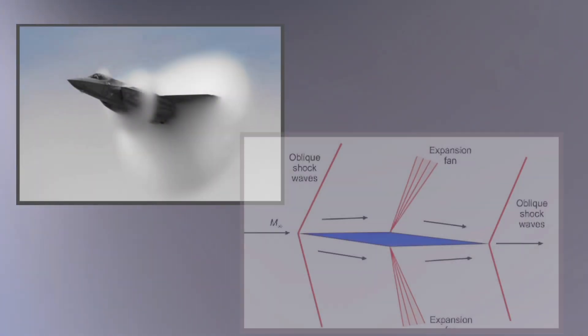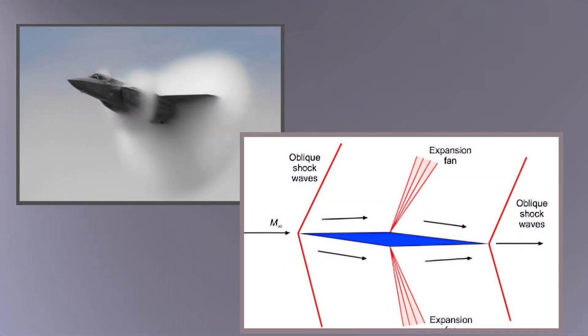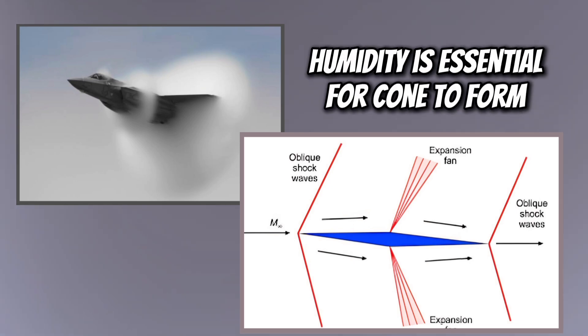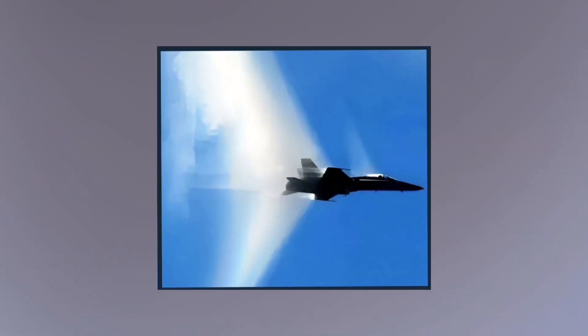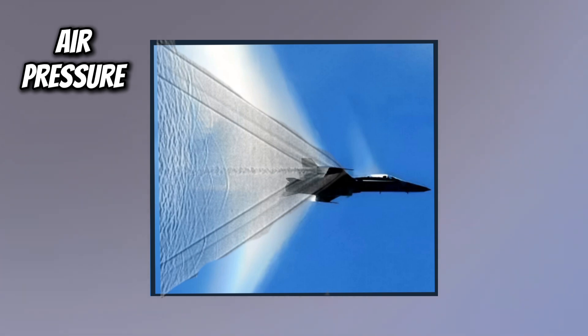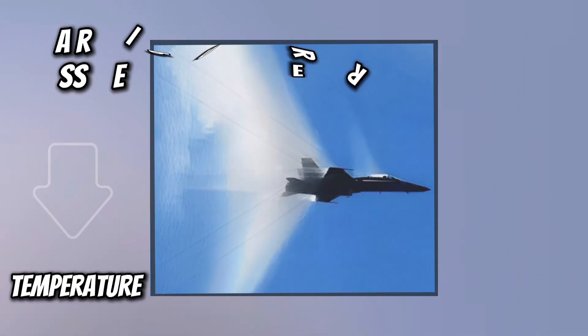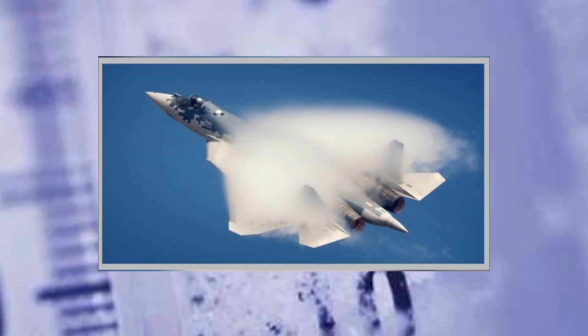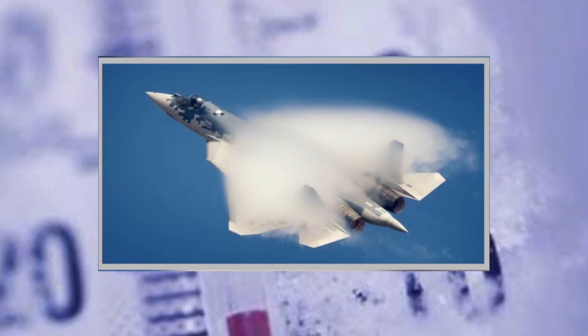The vapor cone forms due to the interaction of the shock waves and expansion fans with the surrounding humid air. As the aircraft generates shock waves, the air pressure behind these shock waves drops rapidly. This rapid pressure drop is associated with an accompanying temperature drop. The drop in temperature can cause the water vapor in the air to condense into tiny droplets, forming a visible cloud.